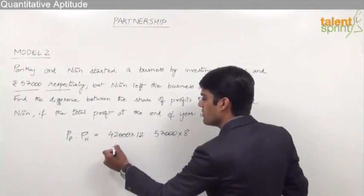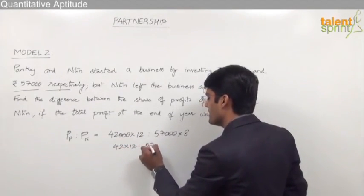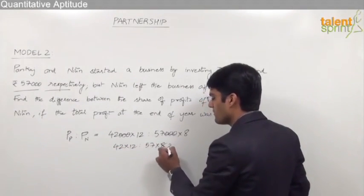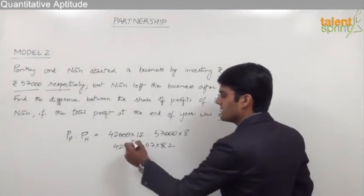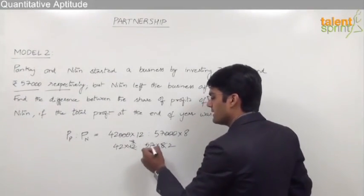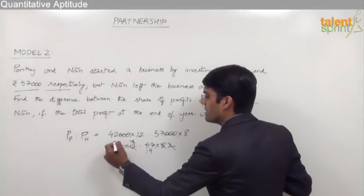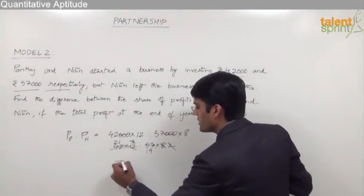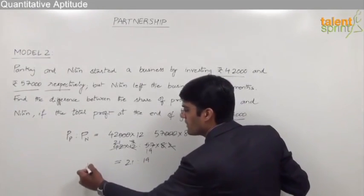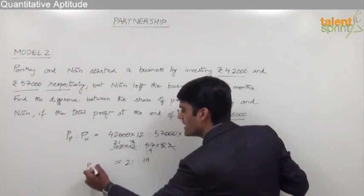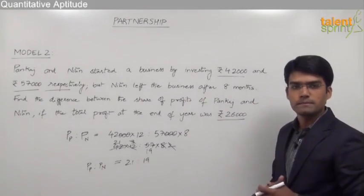Simplifying: 42 into 12 is to 57 into 8, which gives us 504 is to 456, further simplified to 21 is to 19. So the profit of Pankaj is to profit of Nitin will be equal to 21 is to 19.